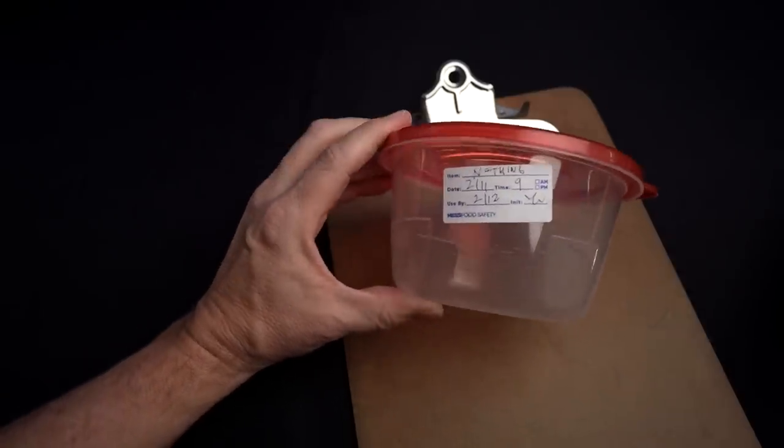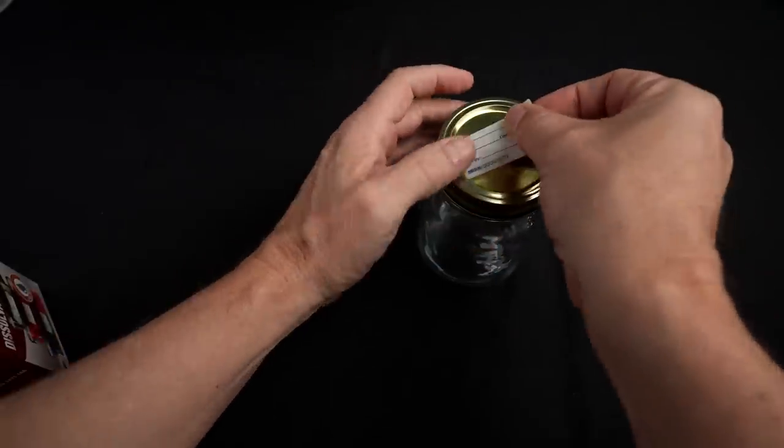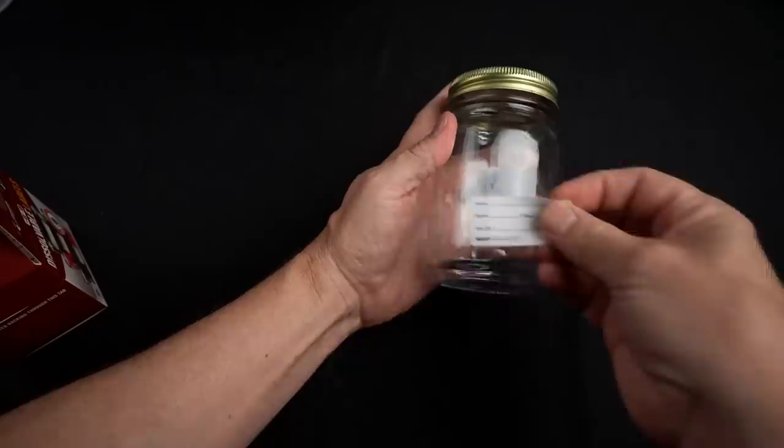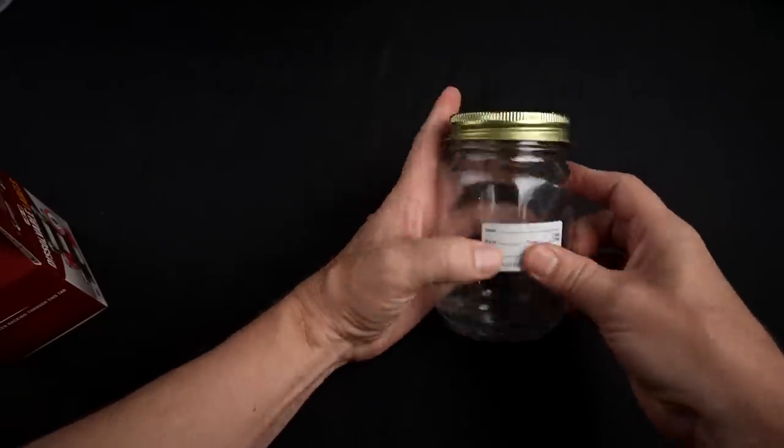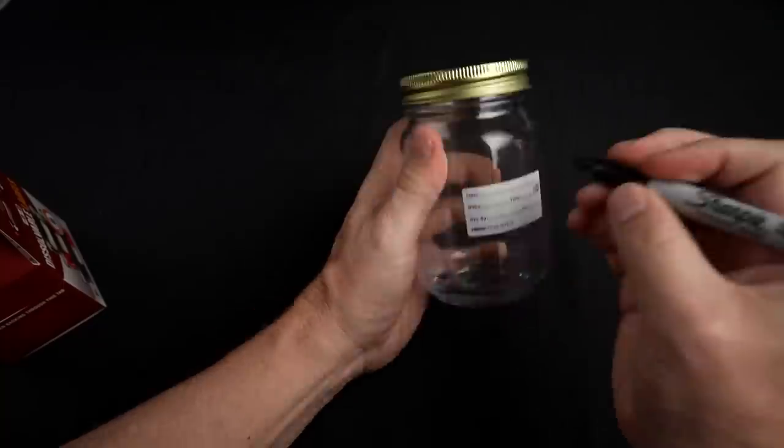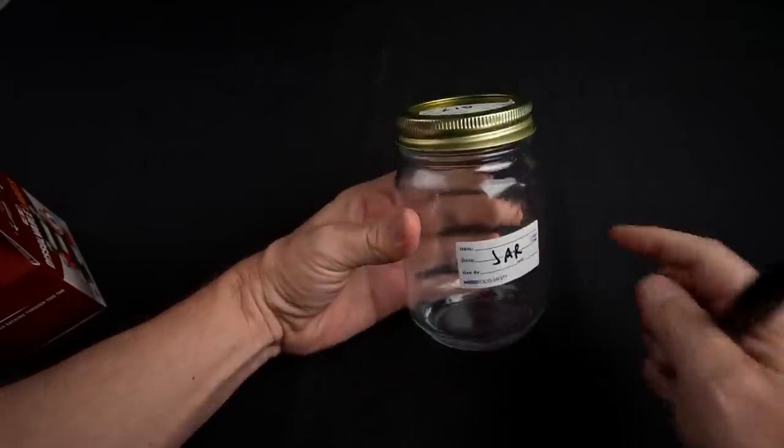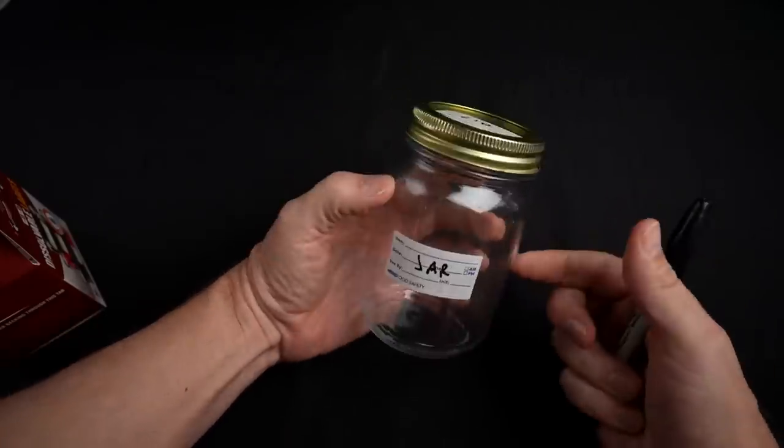This one's going to go on the dishwasher and we'll see how that turns out. I'm going to put two labels on here, one on the lid and one on the jar itself. As much variety as we can get here. I'm going to fill this up with some water so something's in there and put it in the fridge.